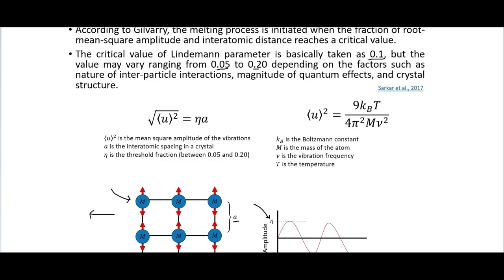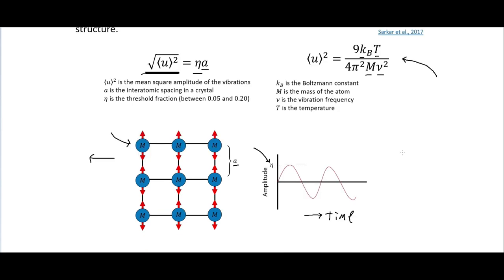The mean square amplitude of the vibrations divided by the distance between molecules or atoms in the crystal lattice gives the threshold fraction η. If this number exceeds a specific threshold you get melting. We can calculate this using the Boltzmann constant, temperature T, the mass of the atom M, and ν, the vibration frequency.